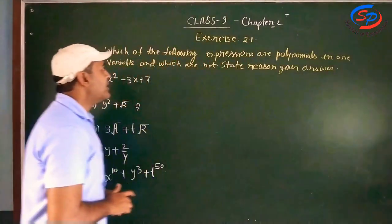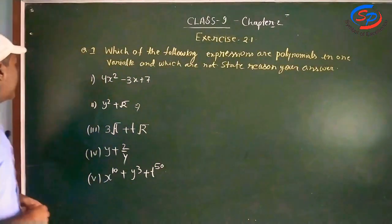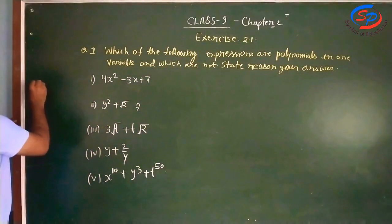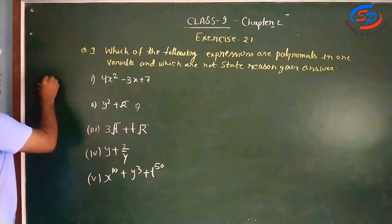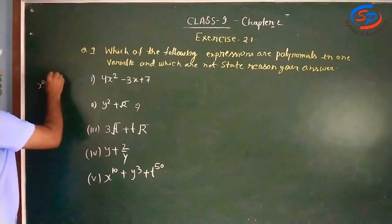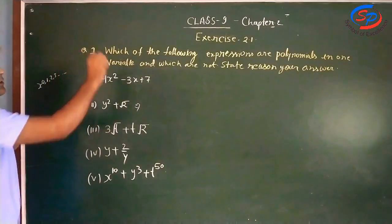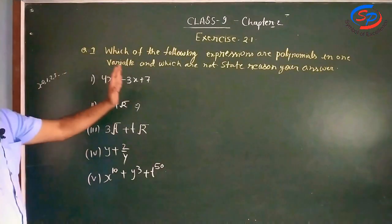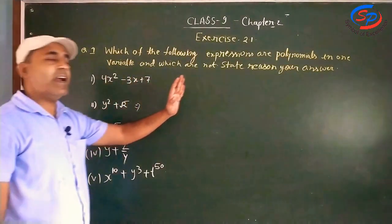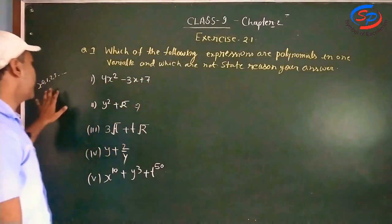Whole number means the power of x can be 0, 1, 2, 3, and so on. This power should be a whole number. If it is not a whole number, the expression will not be a polynomial.